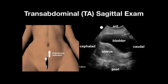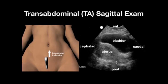For the transabdominal sagittal exam, the transducer is placed in the sagittal plane with the indicator directed toward the patient's head, just cephalad to the pubic symphysis. This gives you an anterior-posterior, head-foot orientation. In the near field you'll see the urinary bladder, often with reverberation artifact. Here you can see the antiverted uterus, the myometrium, and the hyperechoic endometrium. The posterior cul-de-sac wraps around into the anterior cul-de-sac.